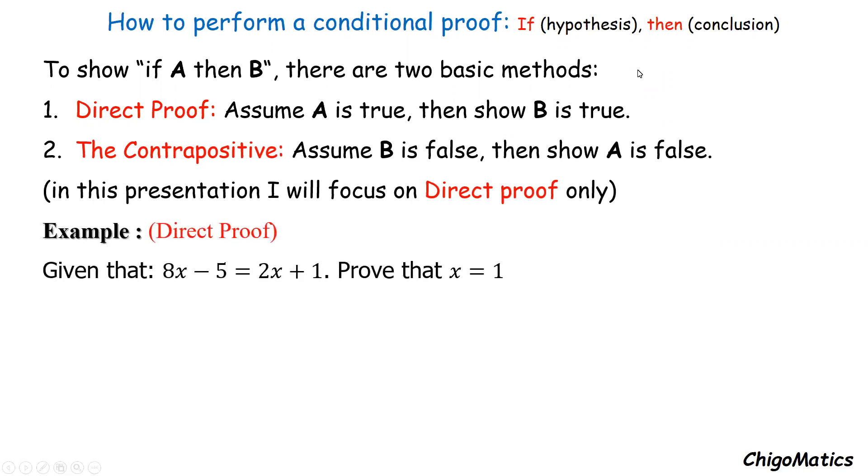As an example, given that 8x minus 5 equals 2x plus 1, prove that x equals 1. So this is the hypothesis and this is the conclusion. We can write that in the if-then form: if 8x minus 5 equals 2x plus 1, then x equals 1.